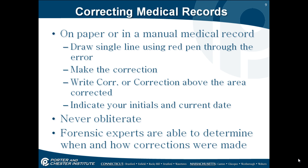Correcting a medical record on paper: draw a single line using a red pen through the error — though it will depend upon your facility whether you use red pen. Make the correction and write "CORR" or "correction" above the area corrected. Indicate with your initials and the current date. Never obliterate, scratch out, or use whiteout.